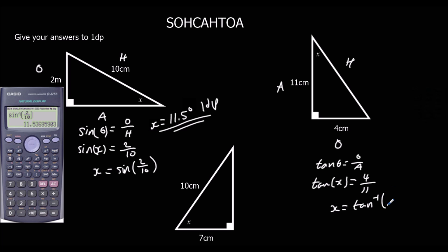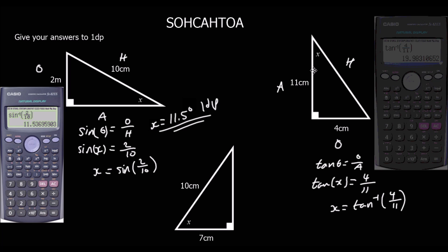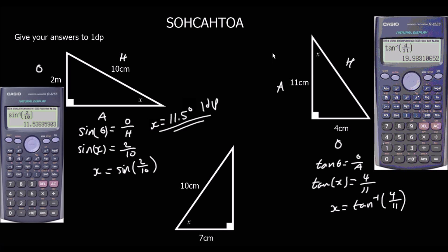So, shift tan 4 over 11. Put it in the calculator. And we get 20.0, 20.0 to 1 decimal place, 20.0 degrees to 1 decimal place.